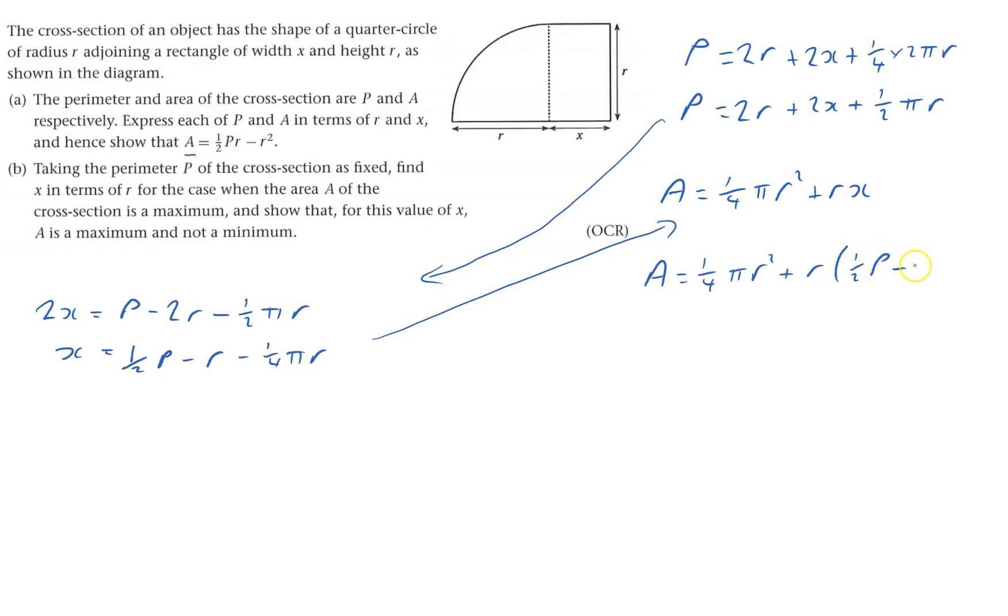So I've got a quarter πr squared and minus a quarter πr squared. That'll go.